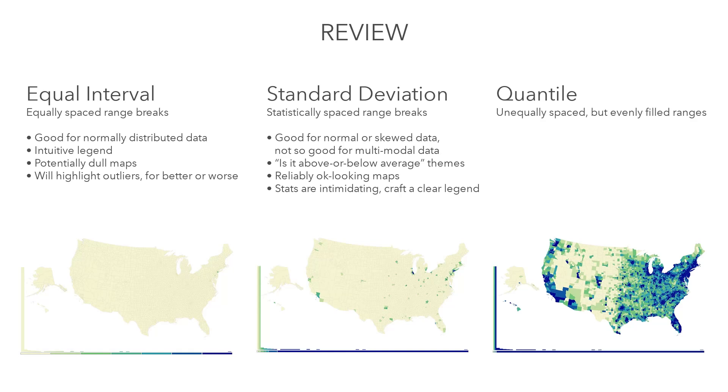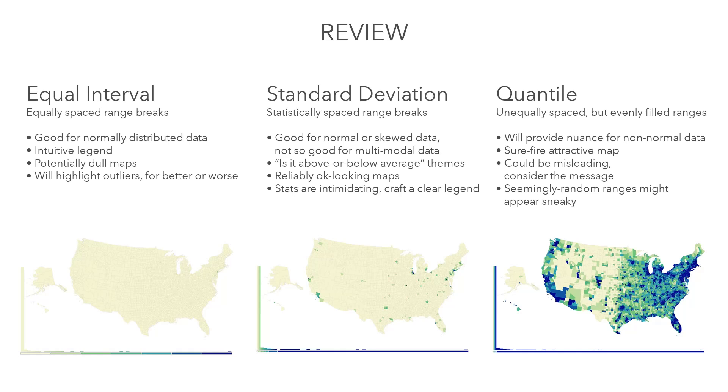Quantile will give you unequally spaced but evenly filled ranges. It forces nuance for non-normal data, even if there isn't much nuance to force. It's a surefire way to have a stellar looking map, but it could be misleading, so consider what message you're trying to communicate. The seemingly random range breaks in your legend labels could appear a little sneaky, so heads up. Natural breaks — cast off your robot overlords and set the range breaks yourself. And after all of this, you might be thinking: why didn't he tell us more about legends, why did he choose that color scheme, or what's up with that projection? And now I've got you thinking like a cartographer.